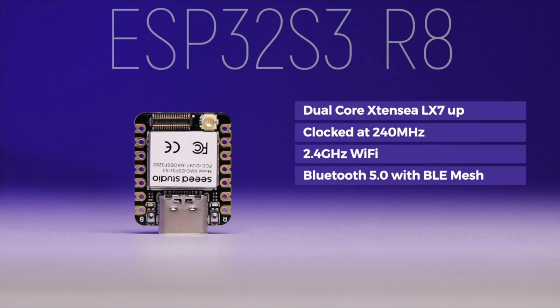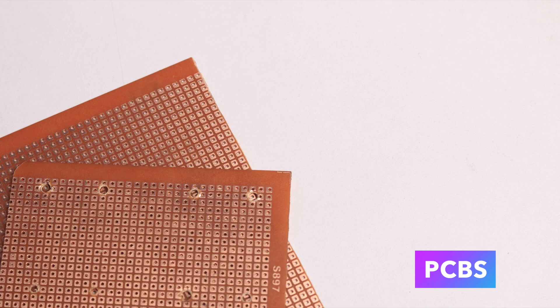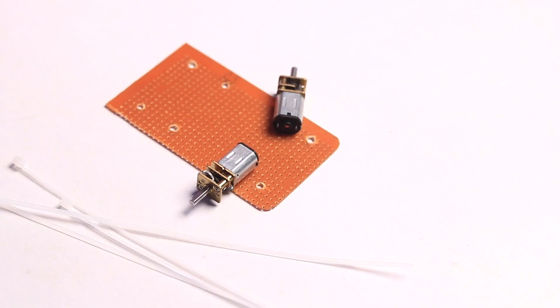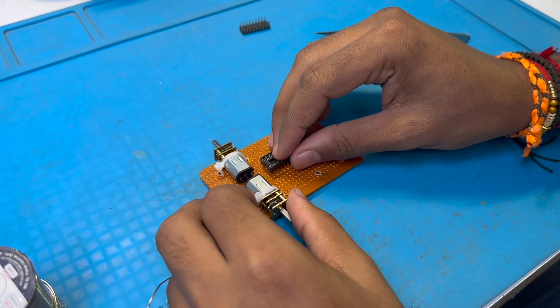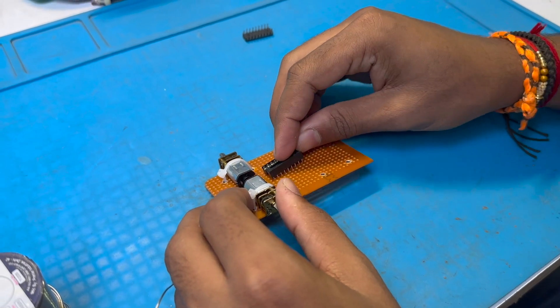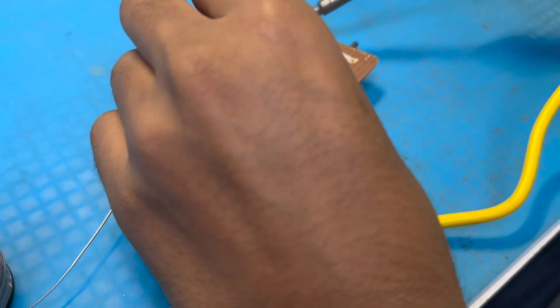We need to connect them all according to the connection diagram. I went for the Seeed XIAO ESP32-S3 because it was the smallest ESP32 cam-based board on the market with a lot of features. If you don't know about this board, I recommend watching my getting started video. We also took a couple of general purpose PCBs to use as the base of the robot. We started building and first fixed the motors with zip ties on a general purpose PCB.